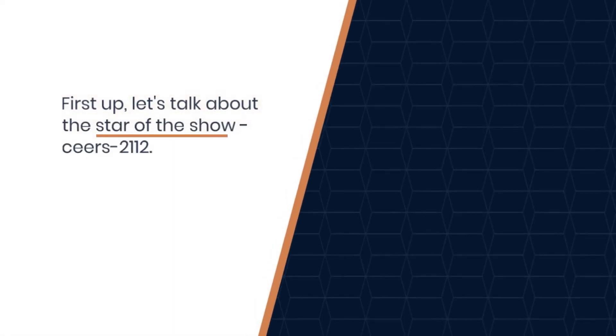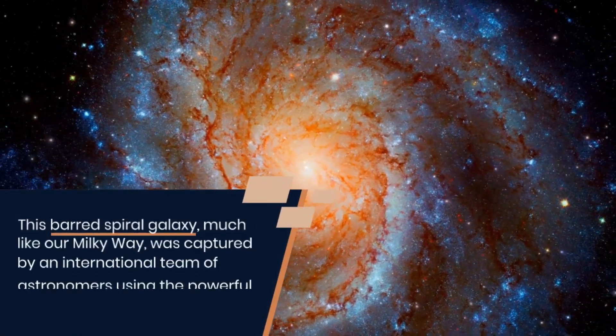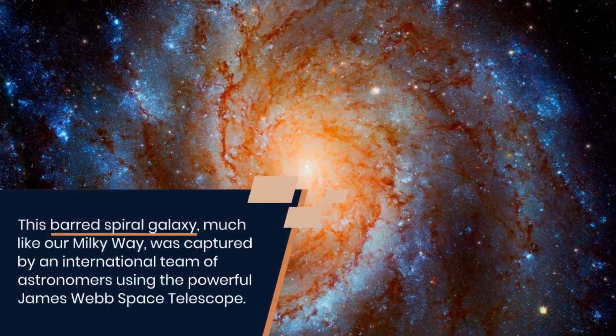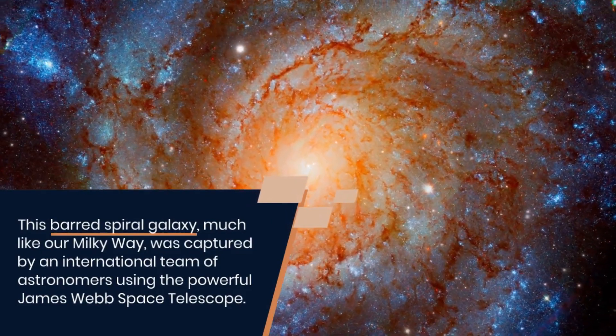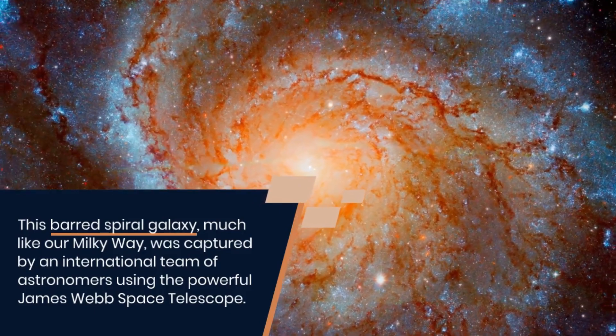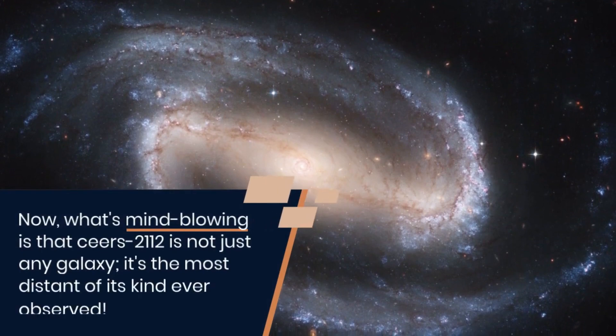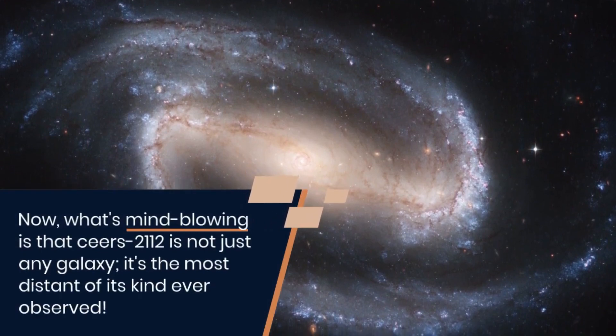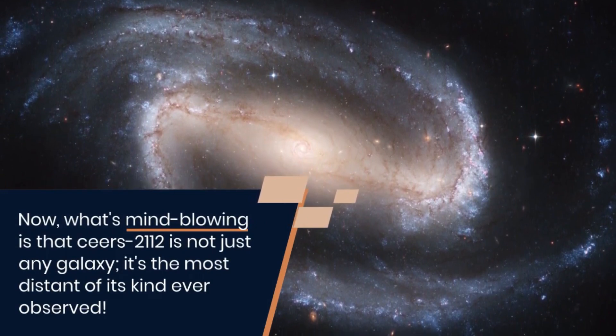First up, let's talk about the star of the show, Ceers-2112. This barred spiral galaxy, much like our Milky Way, was captured by an international team of astronomers using the powerful James Webb Space Telescope. Now, what's mind-blowing is that Ceers-2112 is not just any galaxy. It's the most distant of its kind ever observed.